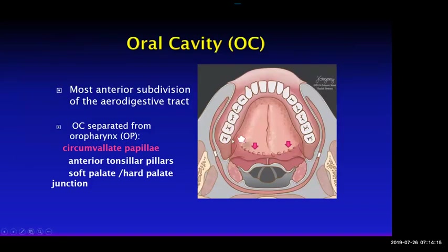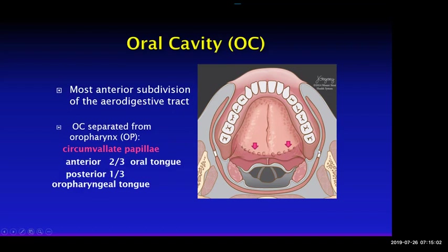The oral cavity is separated from the oropharynx by the circumvallate papillae in your tongue, and also the anterior tonsillar pillar — if you draw an imaginary line along the anterior margin of the anterior tonsillar pillar, that differentiates the oral cavity from the oropharynx. These are two very different anatomical sites with different manifestations of cancer. The circumvallate papillae divide the tongue into the oral tongue and the base of tongue, which is part of the oropharynx.